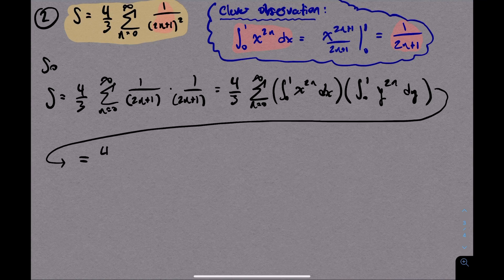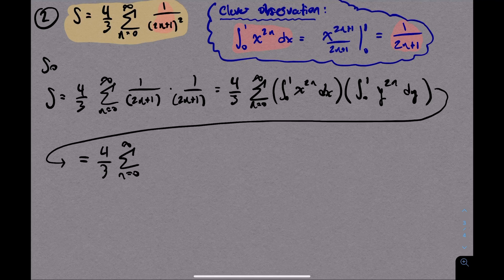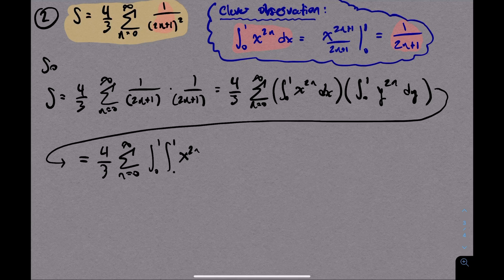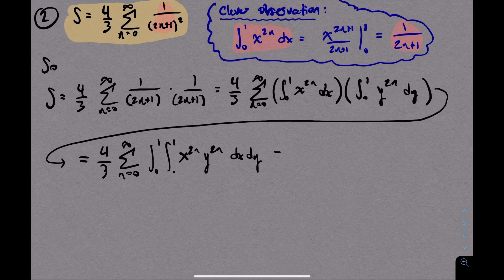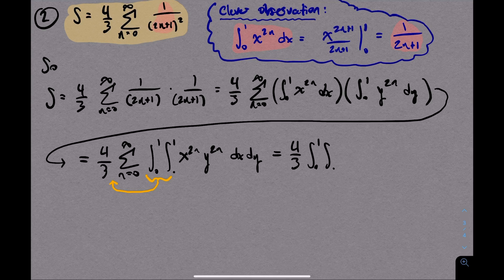Having done that, we have two decoupled single variable integrals with different variables. And by, for example, separation of variables, we can squish these together into one double integral. Now, the next thing I'll do is I'll pull both of these integral signs through the sum. Integration is additive, but all I'm saying here is that the sum of all of these integrals, well, that's just the integral of the sum.